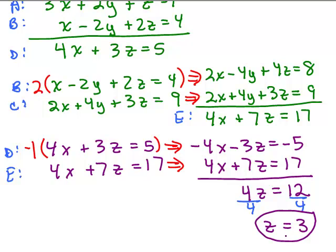Z equals 3 is the solution in every equation — A, B, C, D, and E. Once I know Z, I go back to one of the two-variable equations D or E, and plug in Z to find X. Taking equation D, which was 4X plus 3Z equals 5, and substituting Z equals 3, I get 4X plus 9 equals 5.